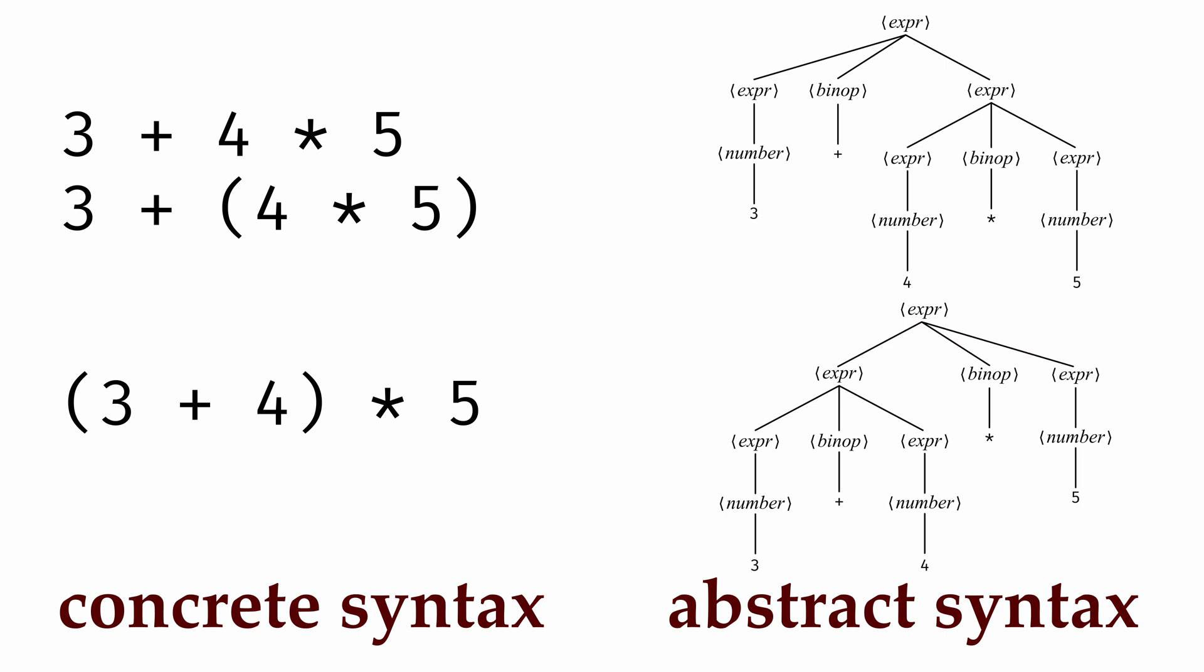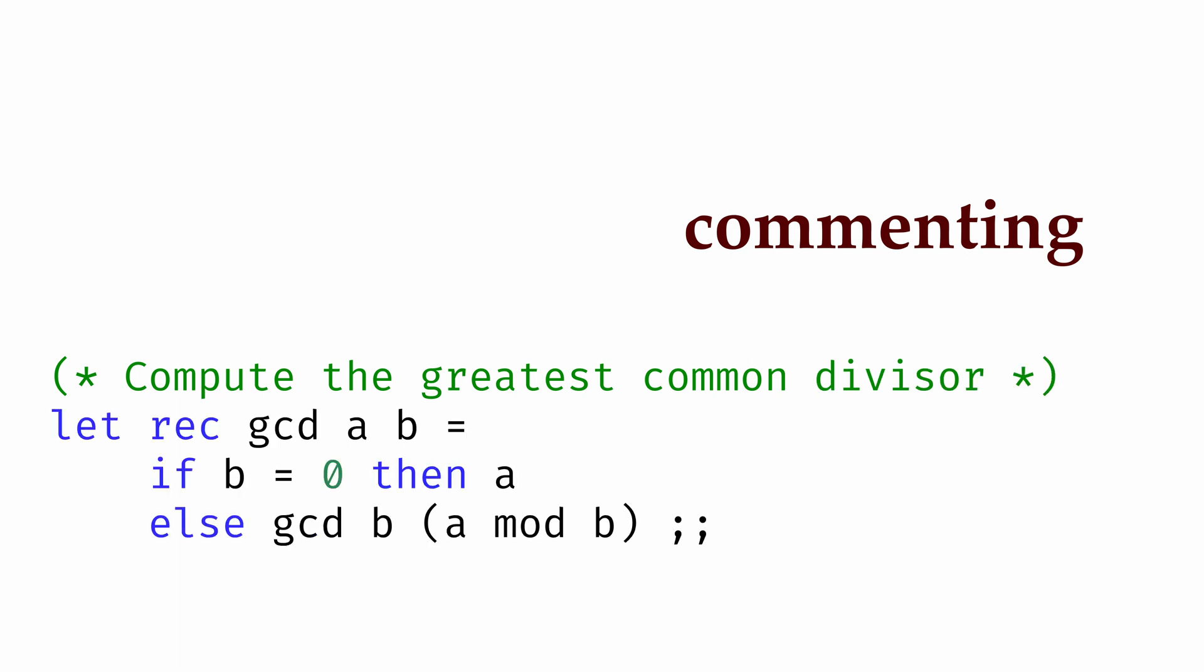One important example of this in programming is commenting. Comments are part of the concrete syntax of a programming language that have no effect on an expression's abstract syntax. As a result, they're only there for people reading the code, but they're very useful for documenting our intentions when programming to human readers. In OCaml, we can add a comment by including the text of our comment inside of parentheses and asterisks. Including comments doesn't change how the program runs.